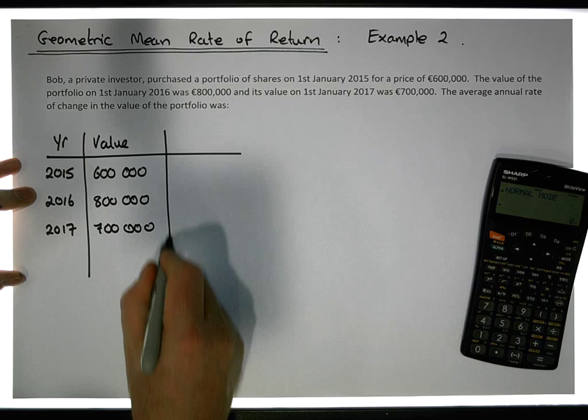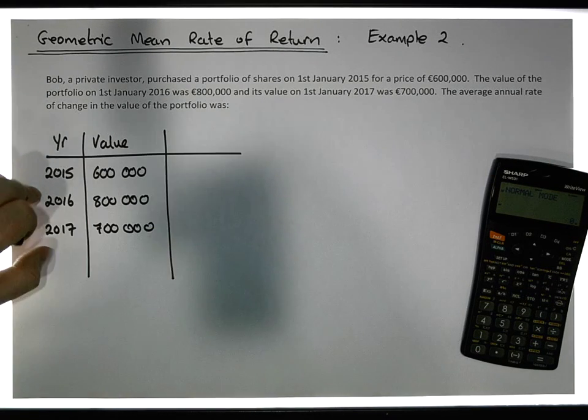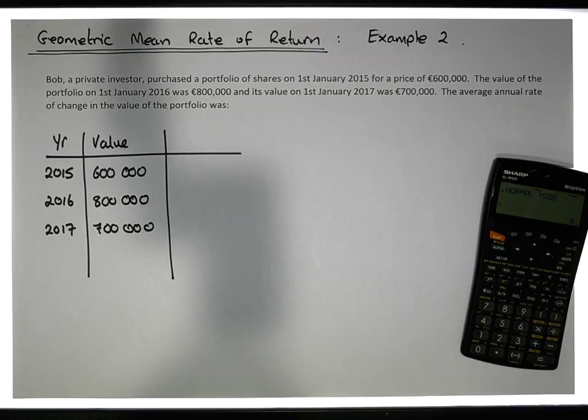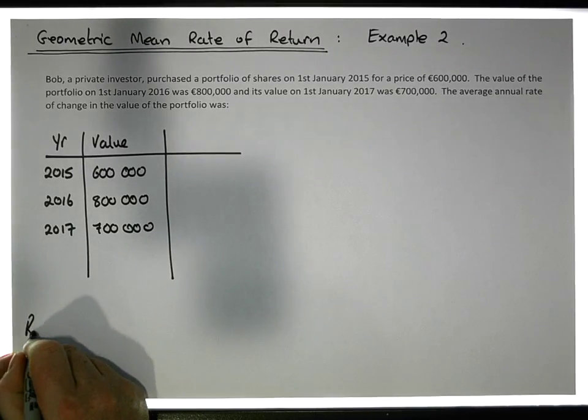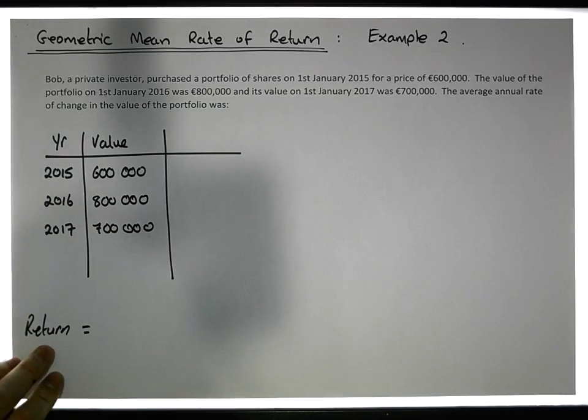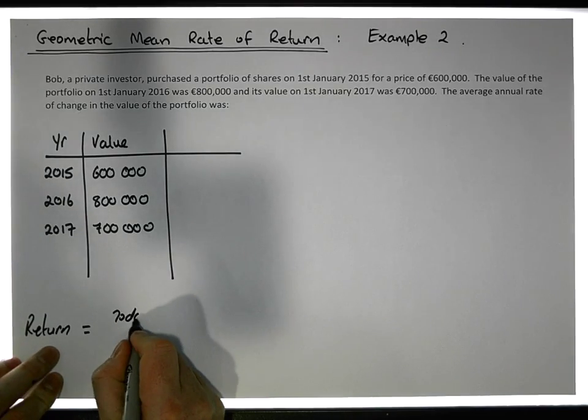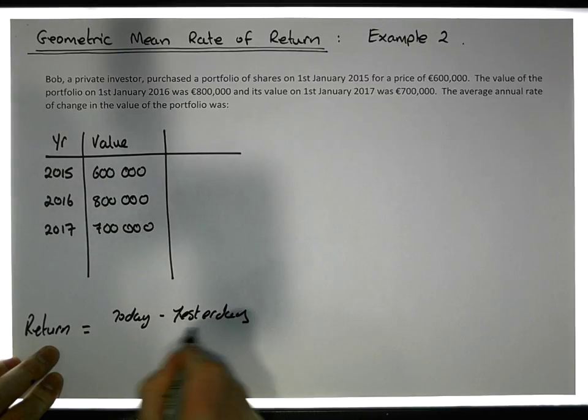What we'd like to calculate is the average annual rate of change with respect to this portfolio. For the rate of change, we should calculate our returns. The return equals today minus yesterday relative to yesterday.